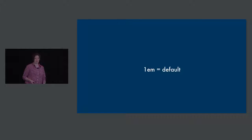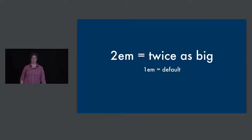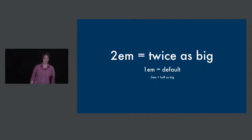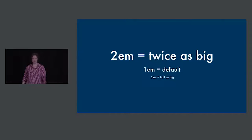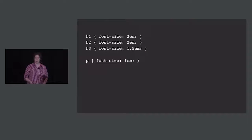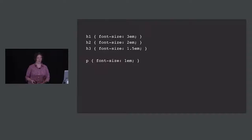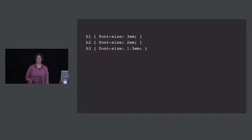One em is your default font size on a site. Going from there, if you give something a size of two ems, it'll be twice as big as your default. Point-five ems will be half as big as your default. It's pretty basic math — you don't need any fancy numbers with lots of decimal points. In CSS, your H1 might have a font size of three ems, three times as big as your default, down to your paragraph at your default font size. If it's already your default, you don't need to declare that again in CSS.